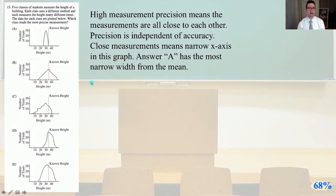Number 15, five classes of students measure the height of a building. Each class uses a different method, and each measures the height many different times. The data for each class are plotted below. Which class made the most precise measurement? High measurement precision means the measurements are all close to each other. Precision is independent of accuracy, and close measurements means a narrow x-axis in this graph. Answer A has the most narrow width from the mean, and that is our correct answer.